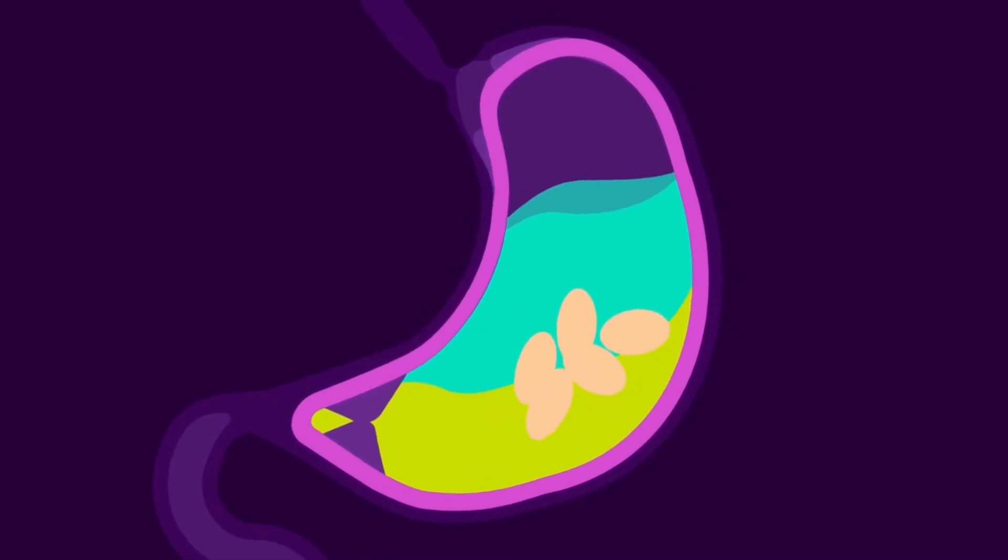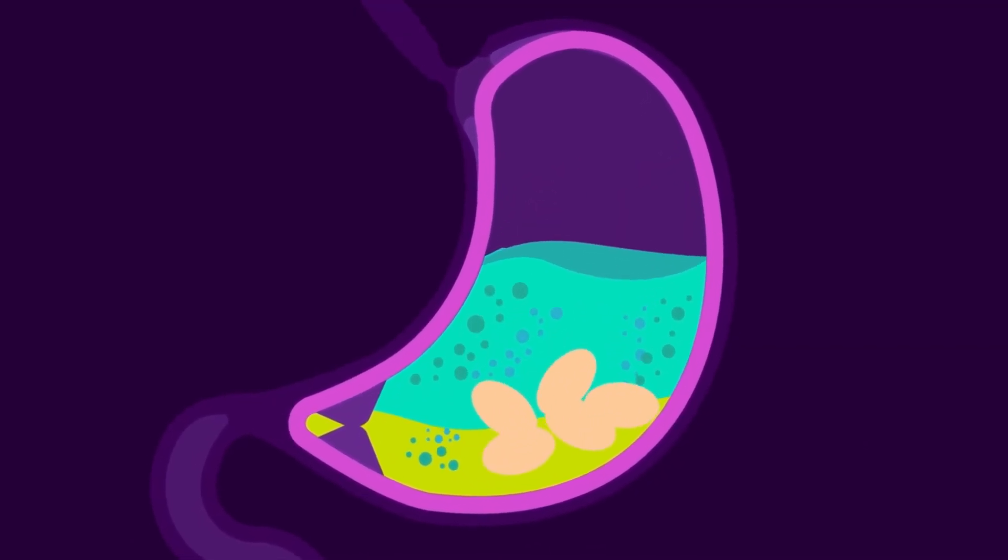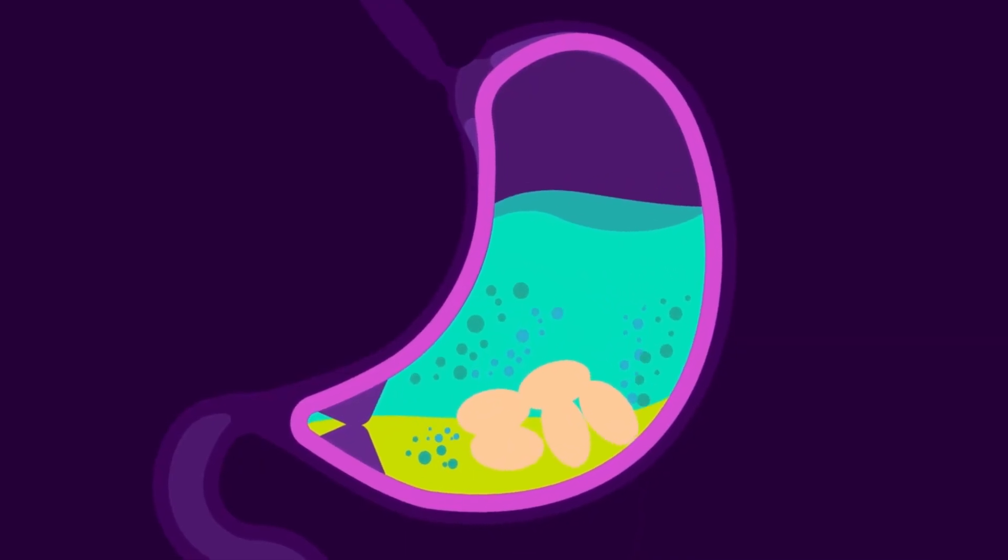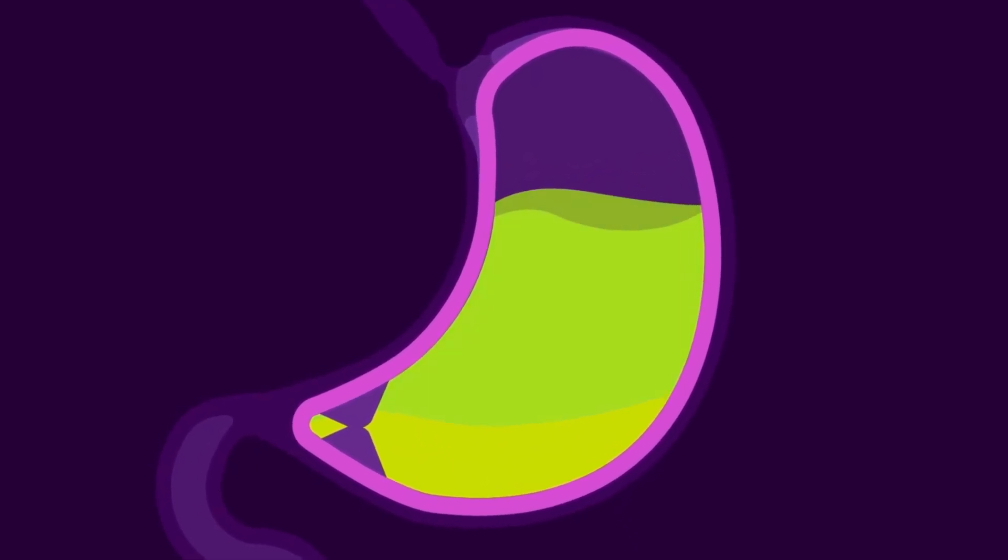Contractions of the smooth muscles in the walls of the stomach roll around its contents, mixing partly digested food with enzymes and acids. This acidic, fluid mixture of gastric juice is called chyme.